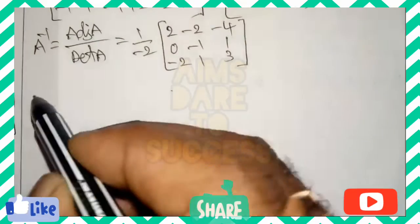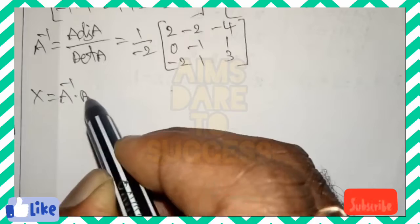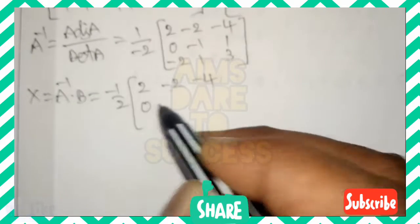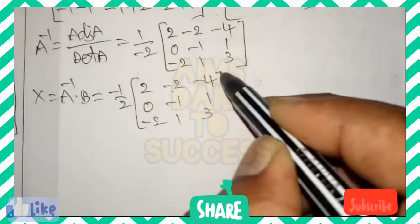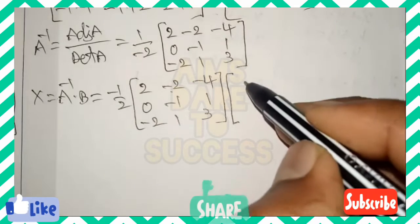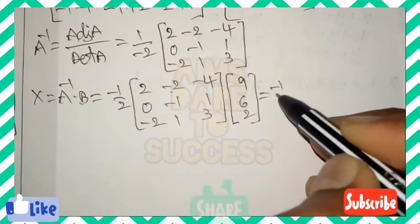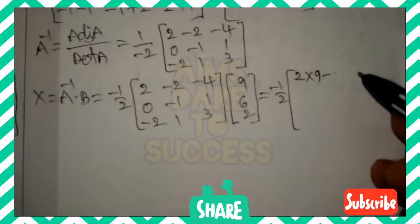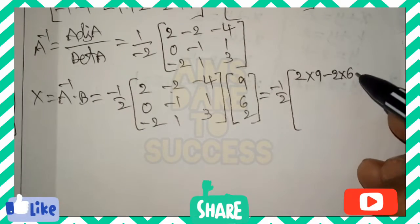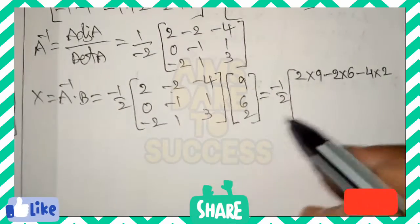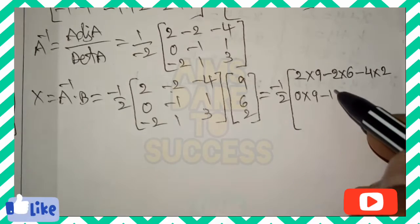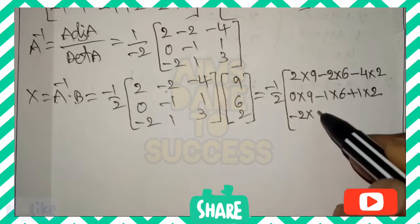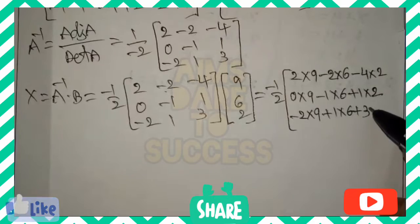We find X = A inverse × B. So X equals (−1/2) times the matrix [2, −2, −4 / 0, −1, 1 / −2, 1, 3] multiplied by B matrix [9, 6, 2]. Row-by-column multiplication: first row: 2×9 − 2×6 − 4×2. Second row: 0×9 − 1×6 + 1×2. Third row: −2×9 + 1×6 + 3×2.